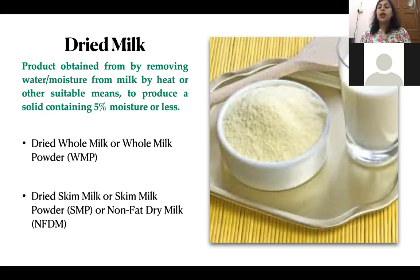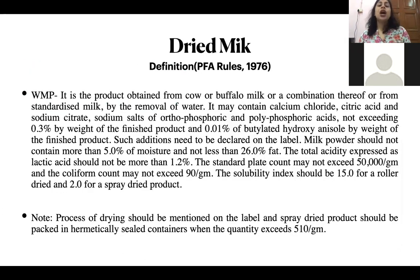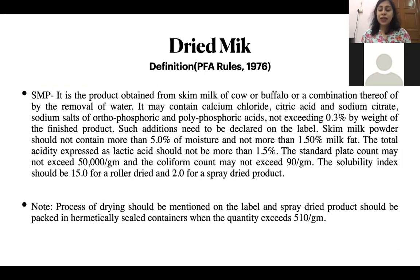In case of WMP, the basic constituent is whole milk — it can be cow, buffalo, a combination, or reconstituted. For skim milk powder, the milk must be skim milk of either buffalo, cow, or a mixture. According to PFA rules 1976, whole milk powder is the product obtained from cow or buffalo milk or a combination, from standardized milk, by removal of water.